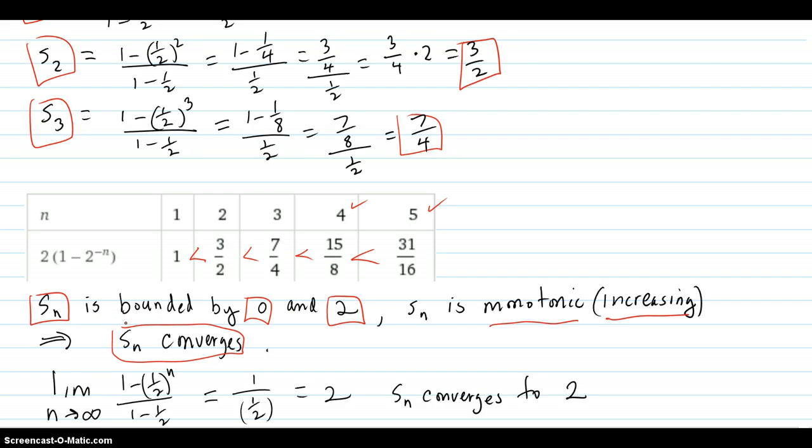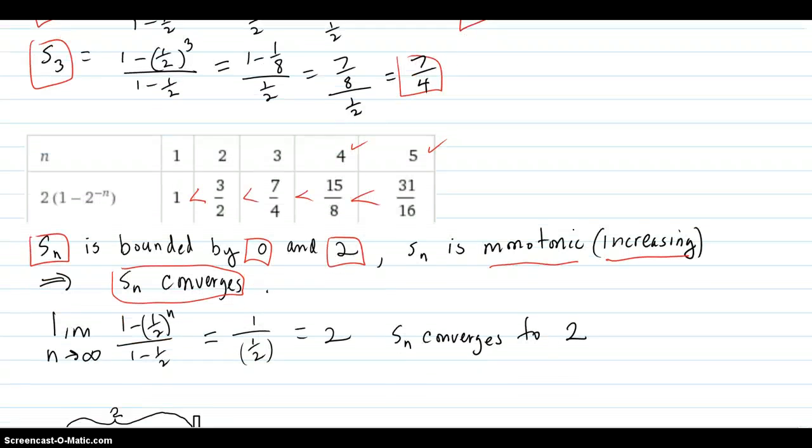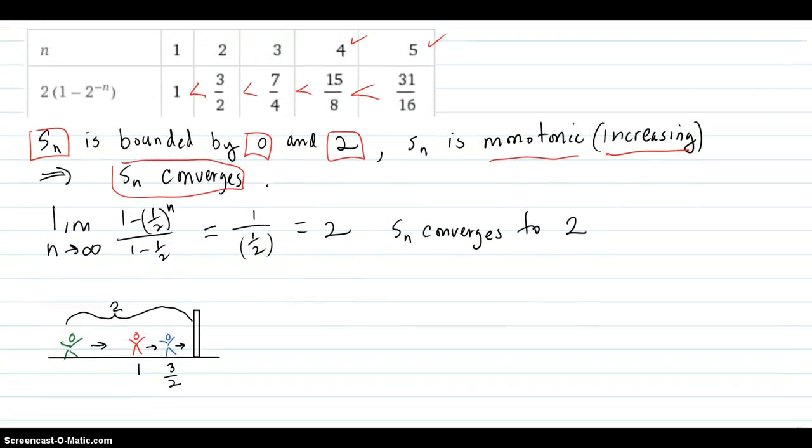In fact, you can guess, as you're walking toward that wall, you're going to go two feet in the limit. You're never going to actually get to the wall, but in the limit, you will have traveled two feet. And you can see that mathematically by setting up the limit.